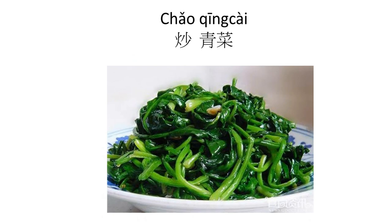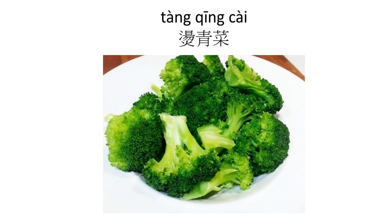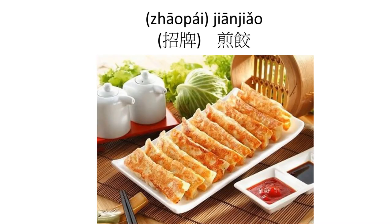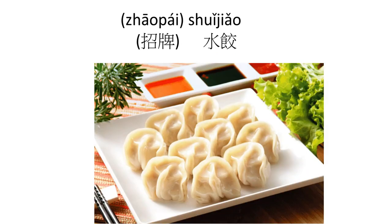炒青菜 is stir-fried vegetables. If you don't want oily food, you can order 燙青菜 instead — they just quickly boil the vegetables in water. 招牌煎餃 is the signature pan-fried dumplings. Whenever you see 招牌, it means the signature dish of that restaurant, so if you don't know what to order, just look for 招牌.